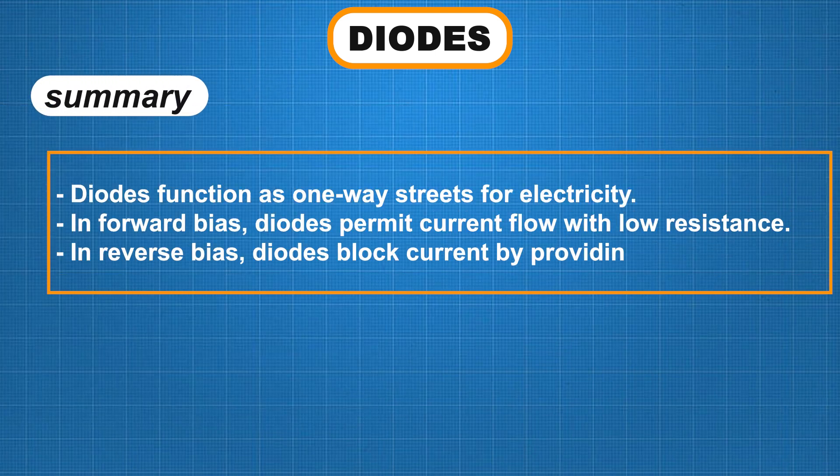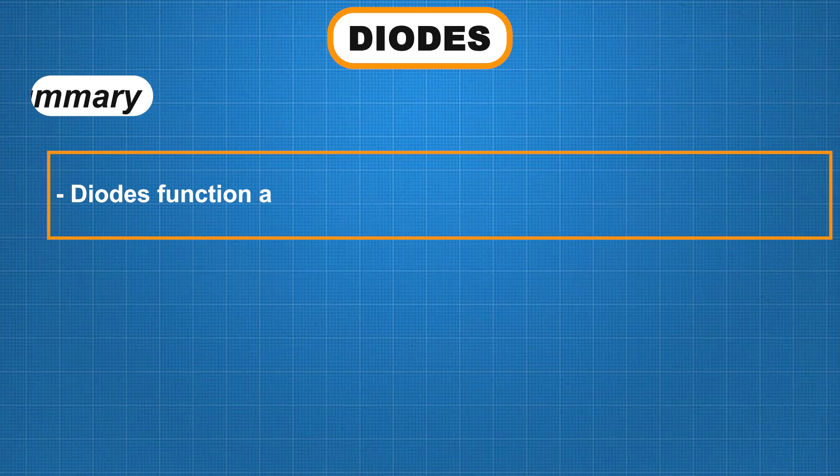So there you have it. Diodes are like one-way streets for electricity. In forward bias, they allow current to flow with low resistance. In reverse bias, they block current by offering high resistance. It's a simple but powerful concept.